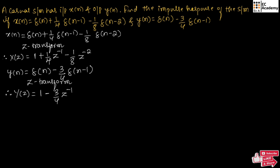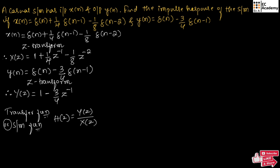We know the transfer function, or system function, can be written as H(z) equal to Y(z) divided by X(z). So from the above equations, we can write H(z) equal to [1 minus 3/4 Z⁻¹] divided by [1 plus 1/4 Z⁻¹ minus 1/8 Z⁻²].